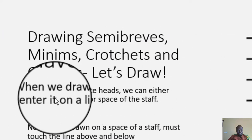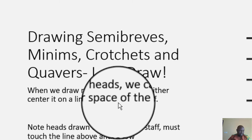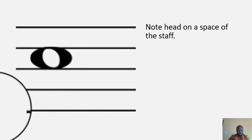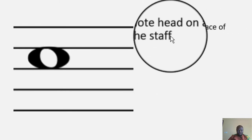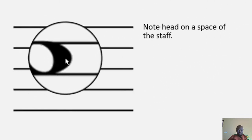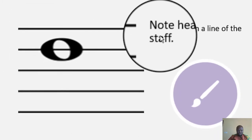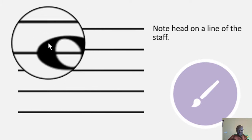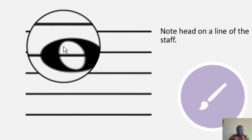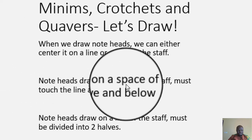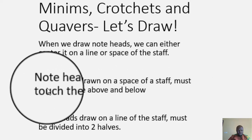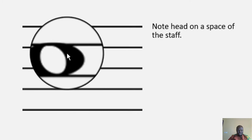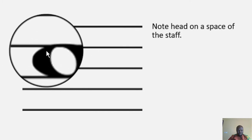When we draw note heads, we can either center them on a line or space of the staff. This is what a note head on the space of the staff looks like — it's sitting between two lines. This is what a note head on the line of a staff looks like — it's sitting directly on top of the line. Note heads drawn on the space of the staff must touch the line above and below.